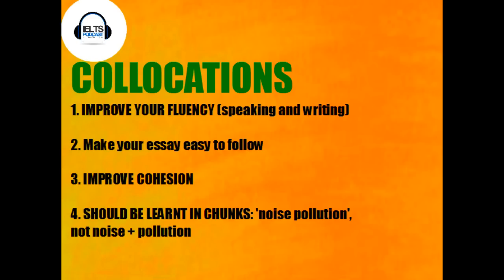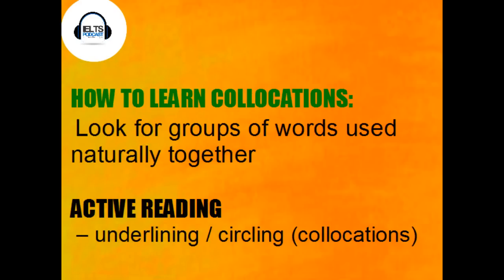When you're learning these collocations, it's better to learn them all in one chunk. So instead of learning 'noise' and 'pollution' separately, you just learn it together as one: 'noise pollution.' When you're learning these, what you're best doing is of course reading lots, but actively reading. That means going through the text and underlining and circling them — not just sitting there absorbing it, but actively highlighting and marking the text you're reading. E-book readers are good for this.